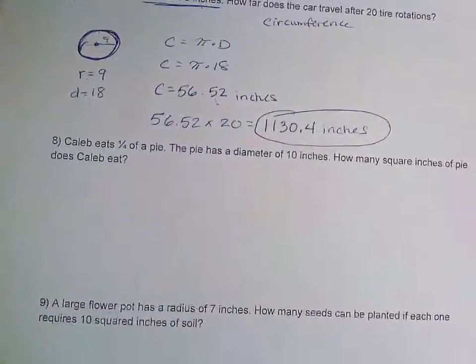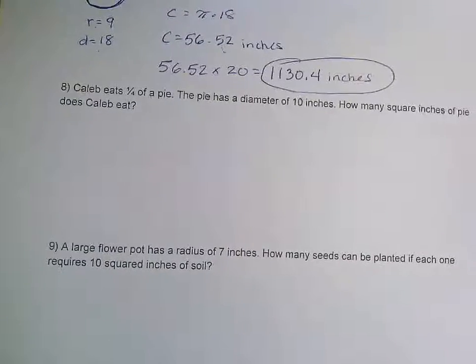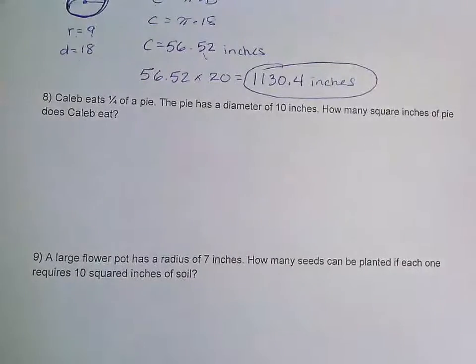Number eight here says, Caleb eats one fourth of a pie. The pie is a diameter of 10 inches. How many square inches of pie does Caleb eat?